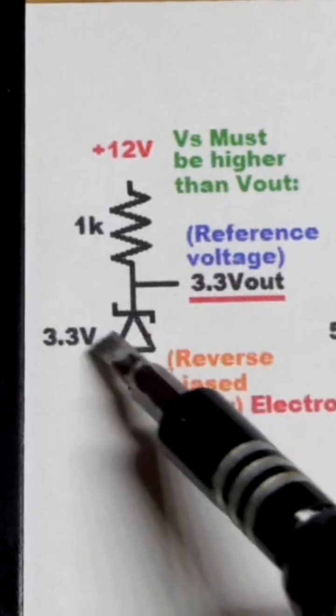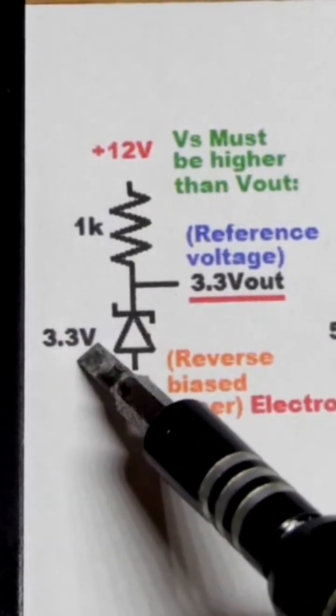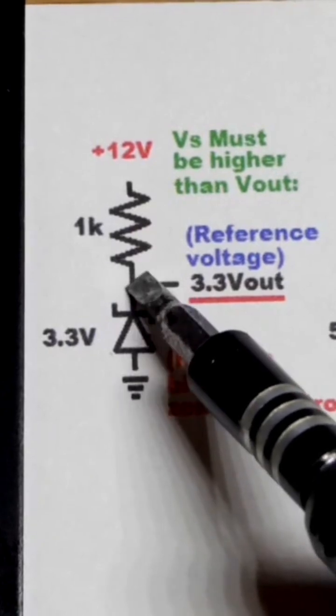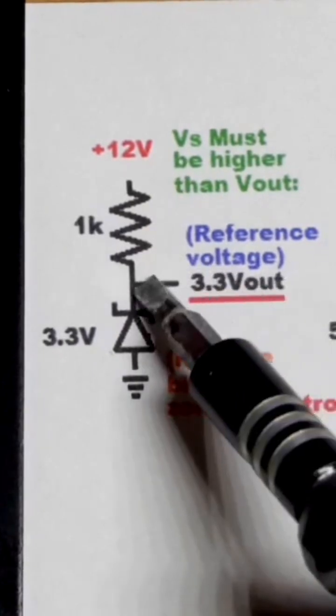The amount of current does adjust this value a little bit, but for the most part you get close to this voltage built up across the Zener diode right there. So if you measure the voltage or send it to like an op amp input or something...